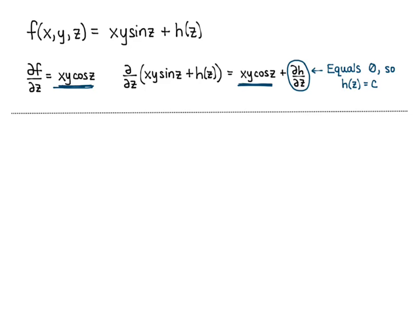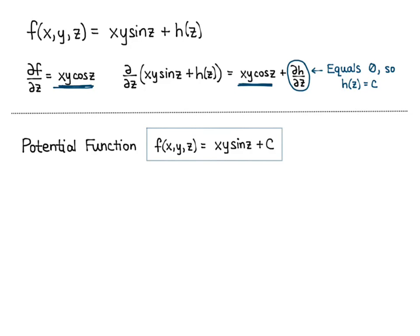Putting all of that together, we get our potential function: f(x, y, z) equals xy sine of z plus C, where C is an arbitrary constant.